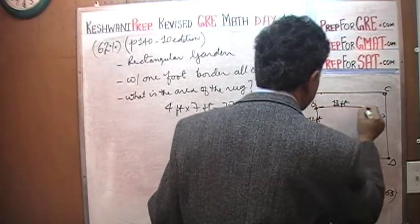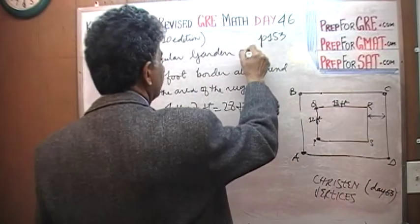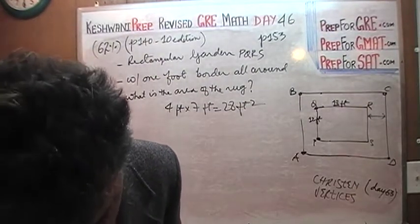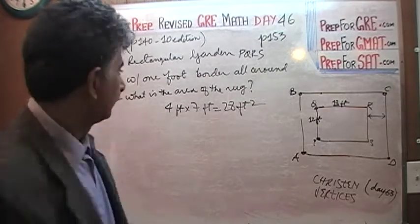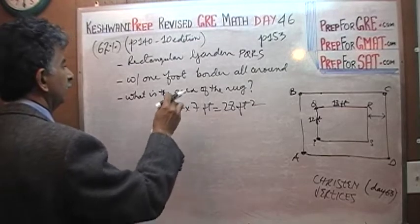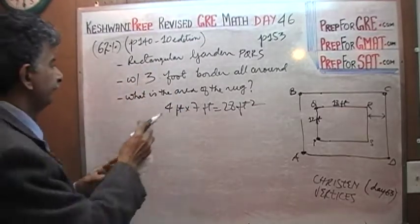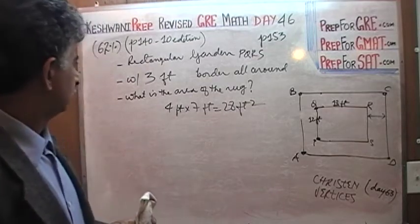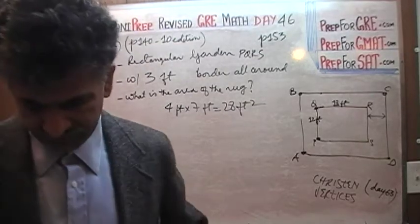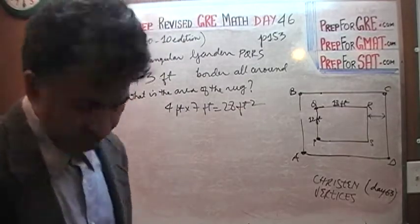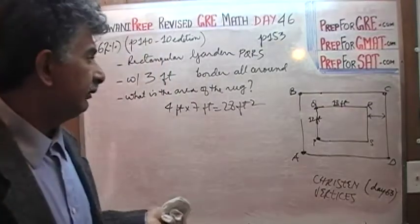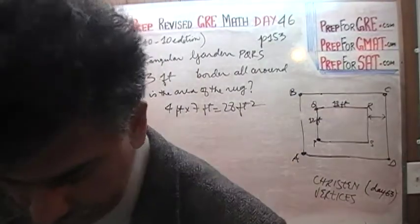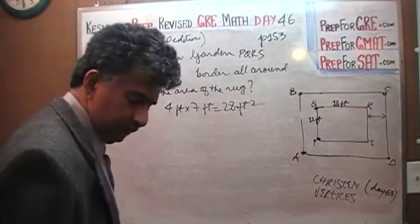Let's christen these points PQRS — so PQRS is our garden. It has a walkway uniformly 3 feet wide all the way around. We are not interested in the area of the garden or the entire thing — we are asked for the area of the walkway. So we are looking for the area of the walkway.